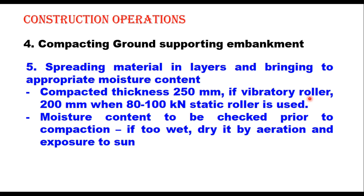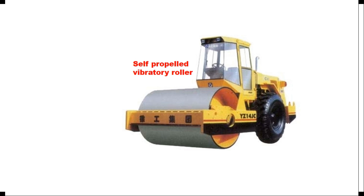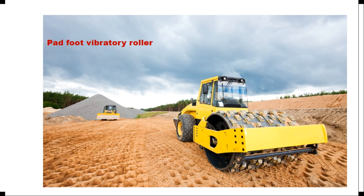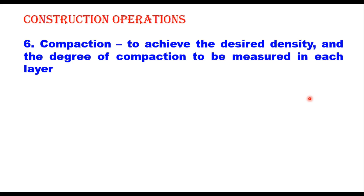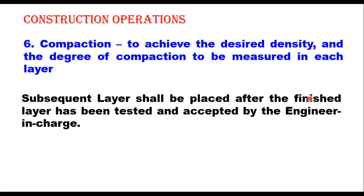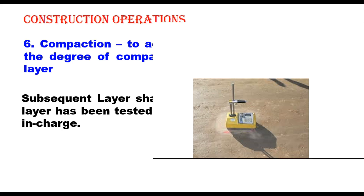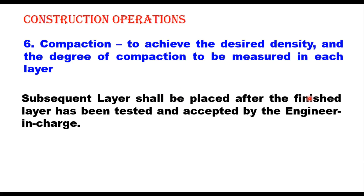After the layer is spread to uniform thickness and moisture is brought to the appropriate level, the next step is compaction, to achieve the desired density. Degree of compaction is to be measured in each layer. Compaction shall be done with a self-propelled single drum vibratory roller or pad foot vibratory roller of 80 to 100 kN, or a heavy pneumatic tire roller of adequate capacity capable of achieving the required density. Subsequent layers shall be placed only after the finished layer has been tested and accepted by the engineer in charge. Field density should be measured by nuclear gauge method or by sand replacement method, and the density achieved should satisfy the criteria of 95 to 97 percent depending upon the construction type.